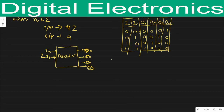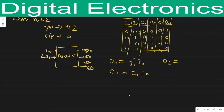After implementing the truth table we will find out the equations. For o0, checking the column where only one 1 is present, the equation is o0 equals i1 bar and i0 bar. For o1, the input combination will be i1 bar and i0. For o2, the equation is i1 and i0 bar. For o3, the input combination will be i1 and i0.